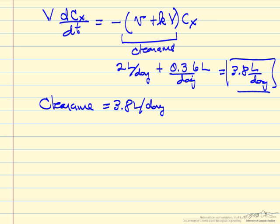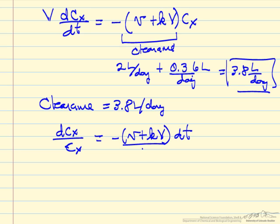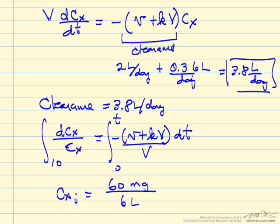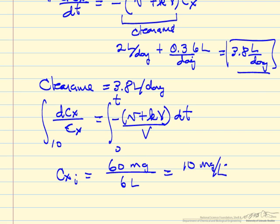To get half-life, we separate variables: dCx/Cx equals minus (V/volume + k) dt. We integrate from time 0 to some later time. The initial concentration is 60 milligrams in 6 liters, so 10 milligrams per liter immediately after IV injection.